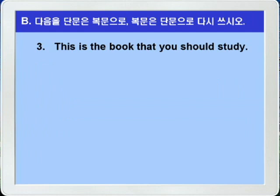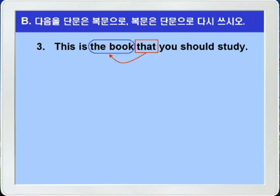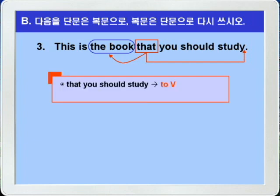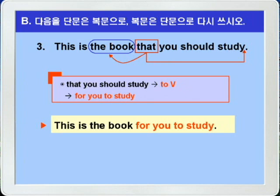3번. 'This is the book that you should study.' 이것은 네가 공부해야 할 책이다. 여기 that은 the book을 선행사로 하고, study의 목적어 역할을 하는 목적격 관계대명사입니다. 단문으로 고쳐야 하니까, 'that you should study' 부분을 투부정사를 써서 'for you to study'로 고치면 되겠네요. 정답: 'This is the book for you to study.'